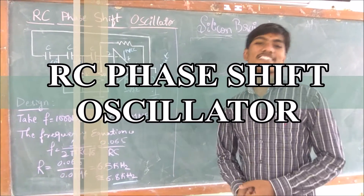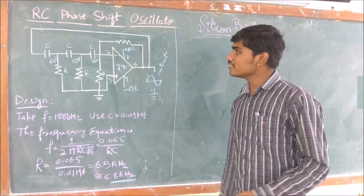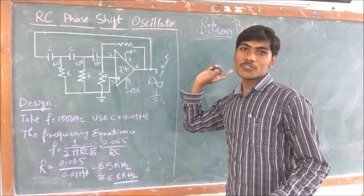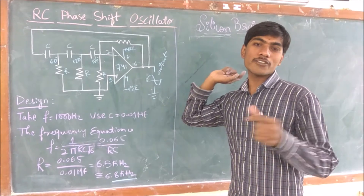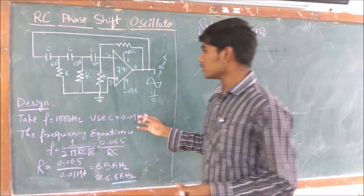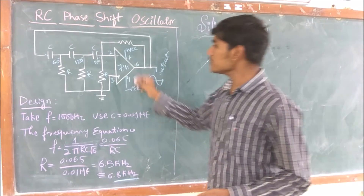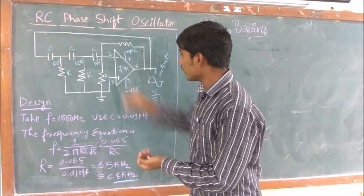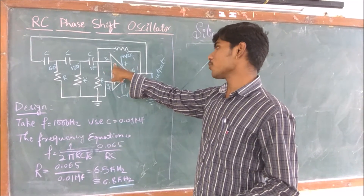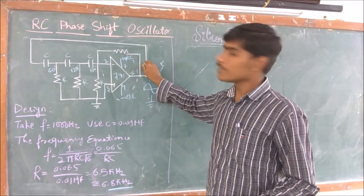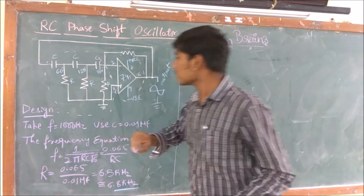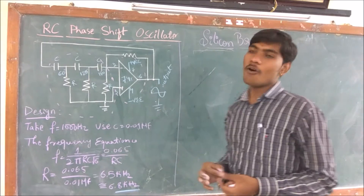Welcome to Silicon, this is Aarish Kumar. In this section I want to explain the RC phase shift oscillator, which I explained in a previous video on feedback. This is the circuit I have designed — this is the amplifier in inverting mode, which means it is 180 degrees out of phase. This section here is the phase shift section.